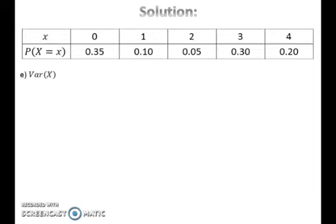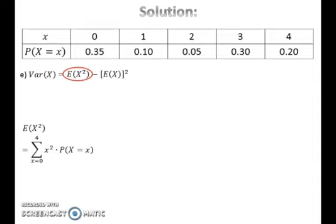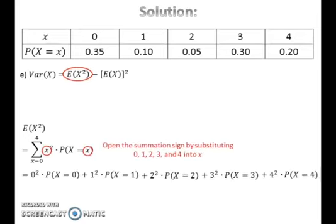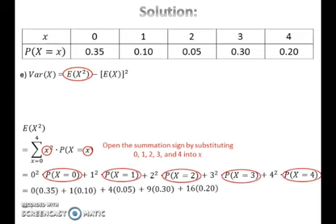To find the variance of x, first find the expected value of x squared. To find E(X²), take the summation of x squared times probability for all x from 0 to 4. Open the summation sign by substituting 0, 1, 2, 3, and 4 into x, then substitute the probabilities and calculate E(X²). Finally, substitute the values of E(X²) and E(X) into the variance formula and calculate the variance of x.